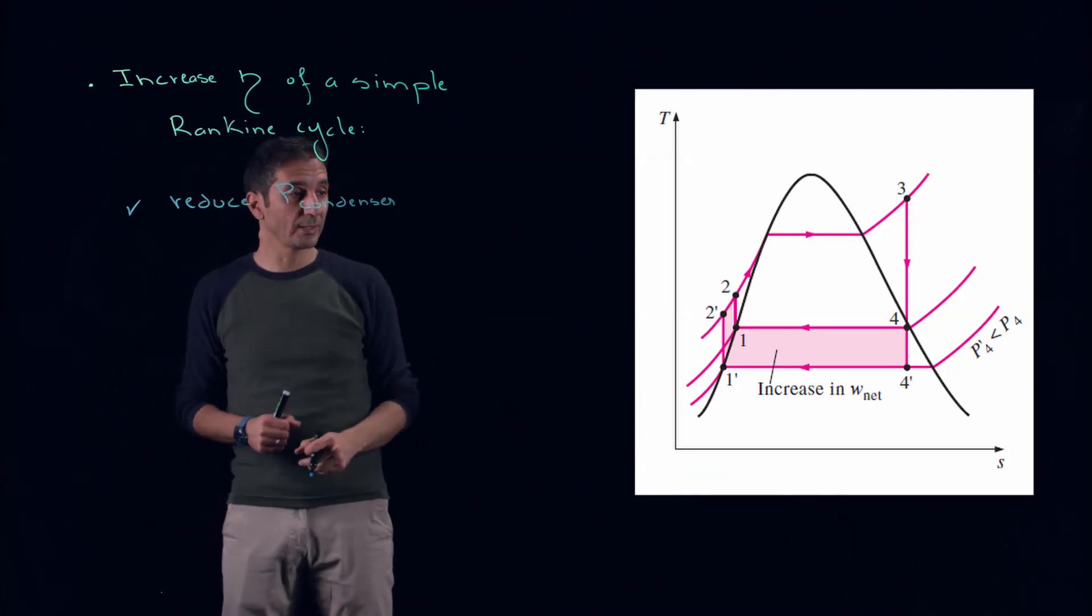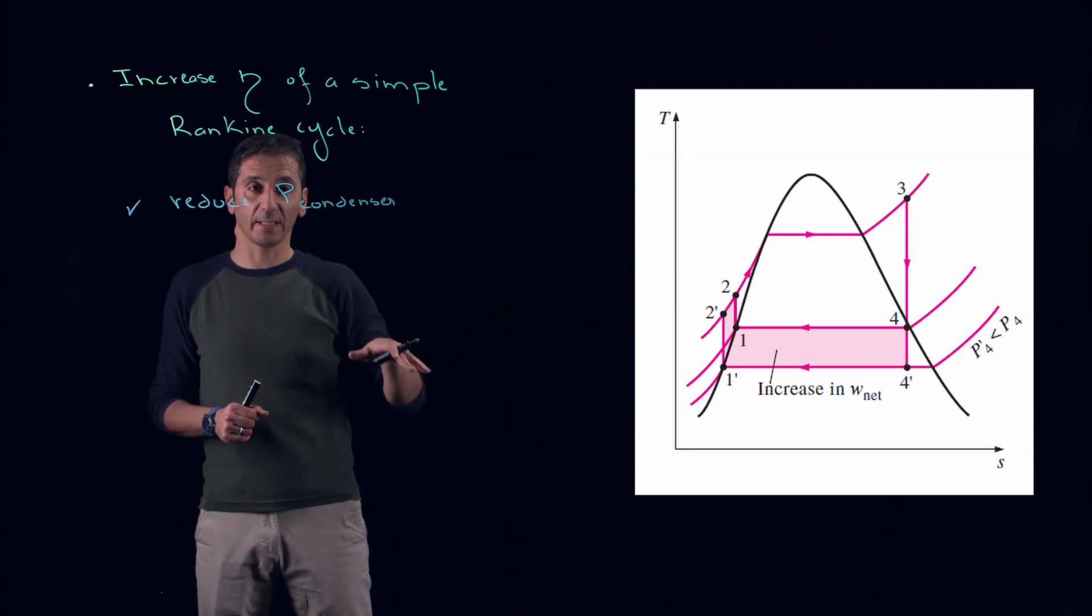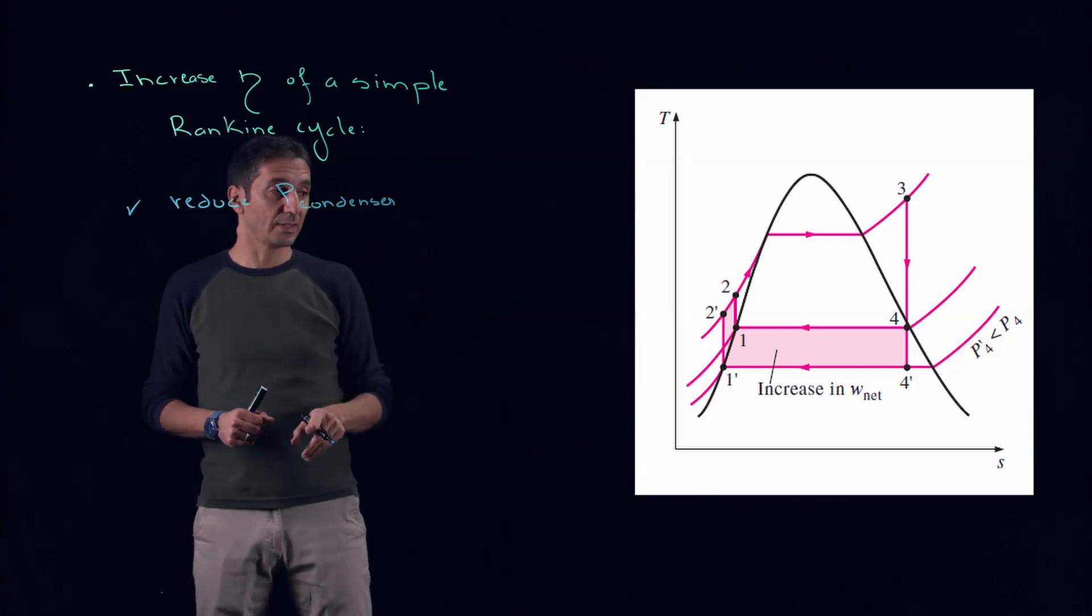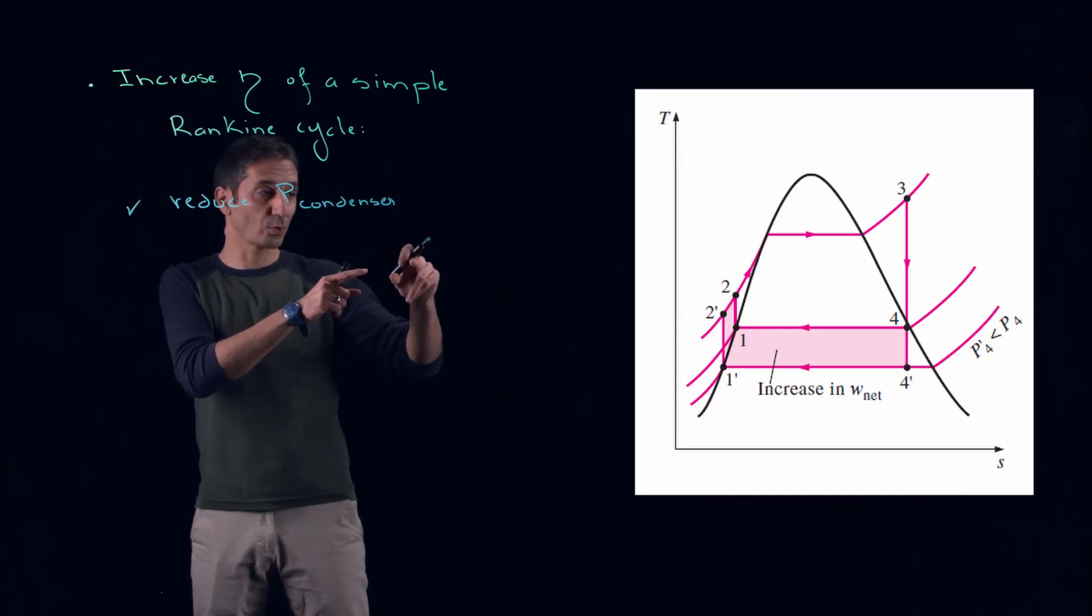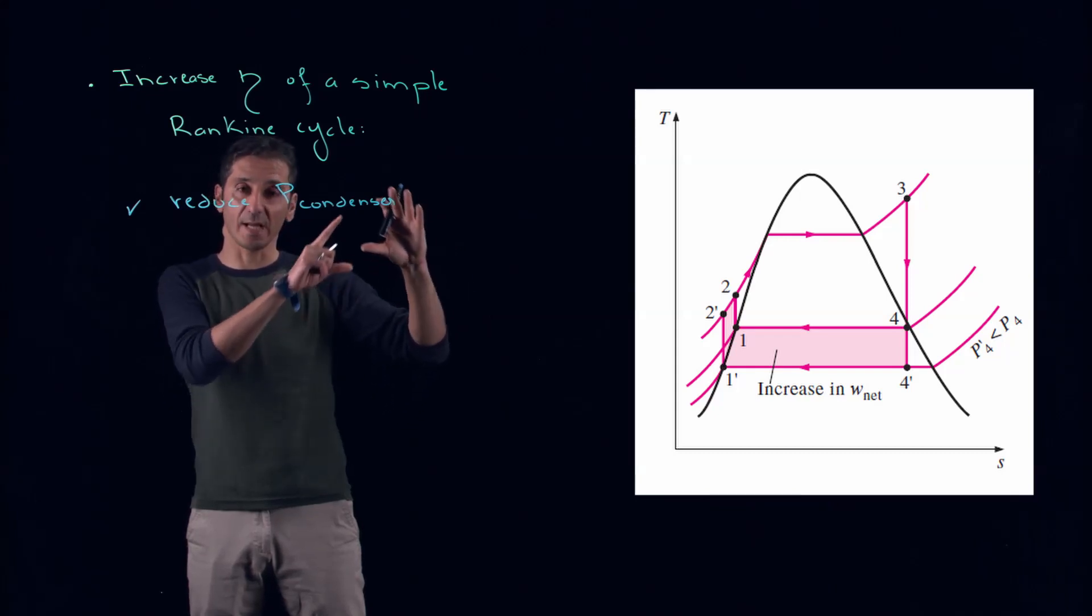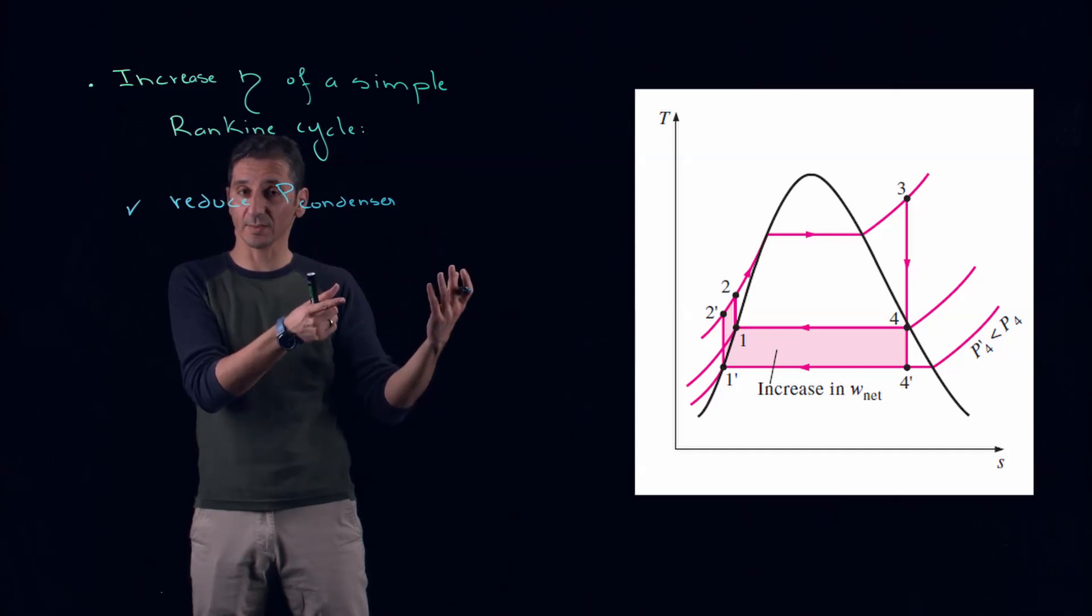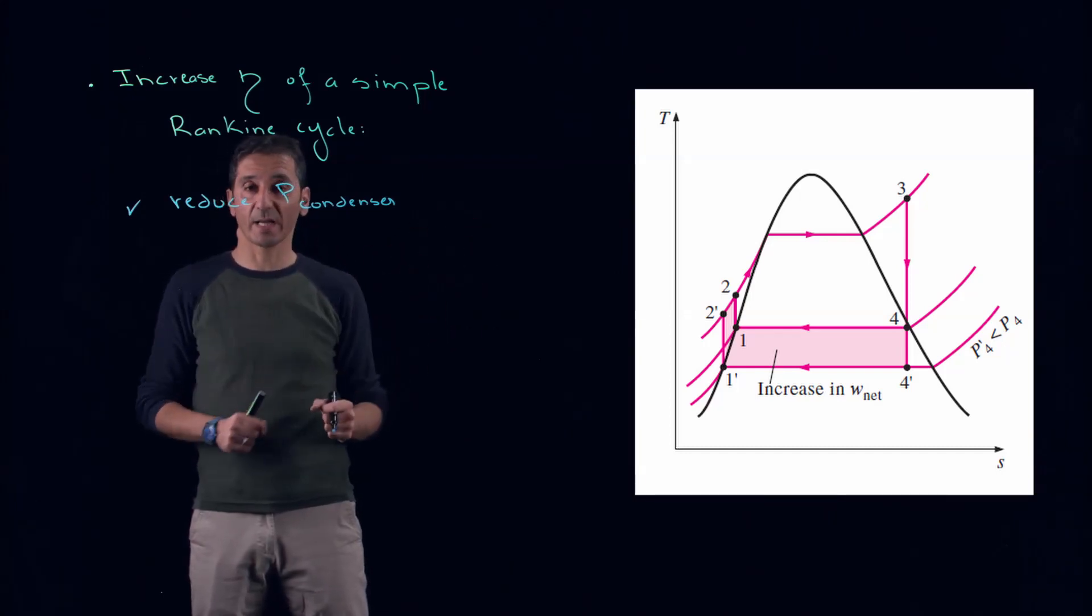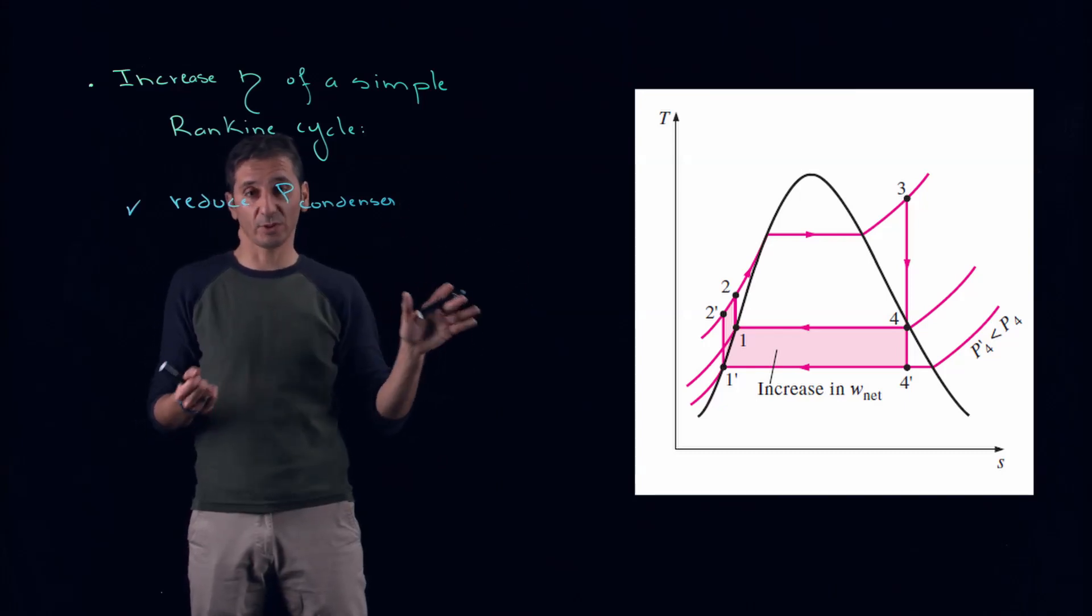By doing this, the pressure line will go down, and the consequence is that our area underneath the process 4 to 1 will decrease, which is good for us. We're rejecting less heat, and the area inside will increase. The work net will increase, and the QL will decrease without touching Qin, which is good.